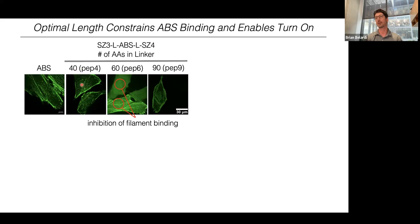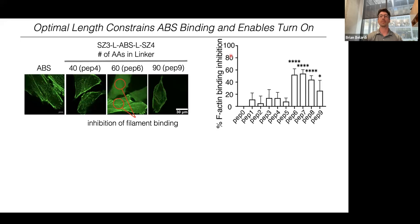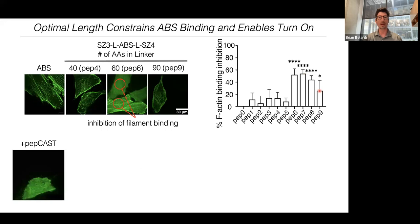With only 40 amino acids of linker, this CAST is unable to go into the off state — it's still bound to the F-actin cytoskeleton. With very long linkers, we see the same thing. But with amino acid linkers in the optimal range, this CAST construct does not localize well to the F-actin cytoskeleton — there's inhibition of filament binding. We quantified this for a variety of CAST constructs with different linker lengths and found we need about 60 amino acids or more, tapering off as linkers get longer.